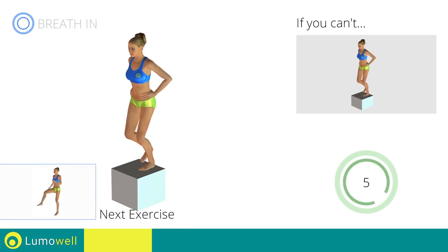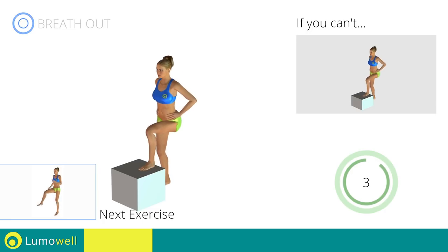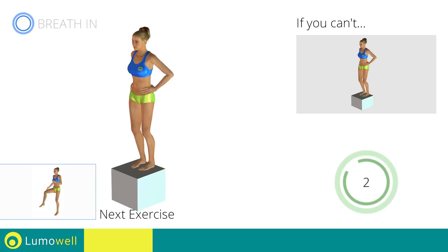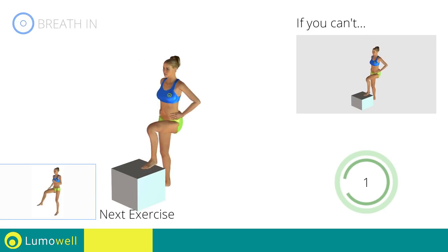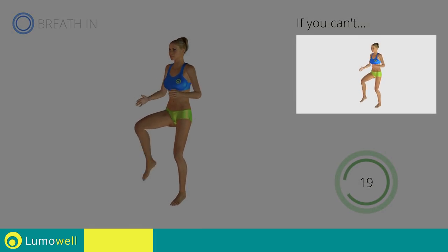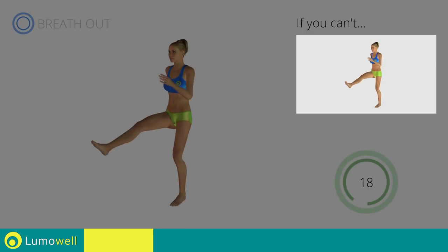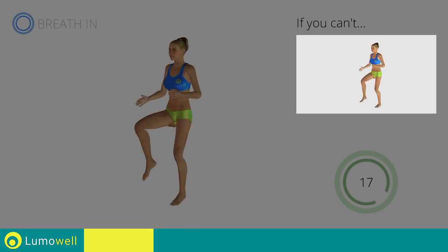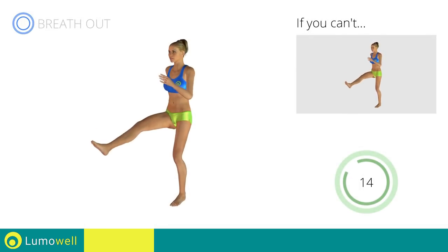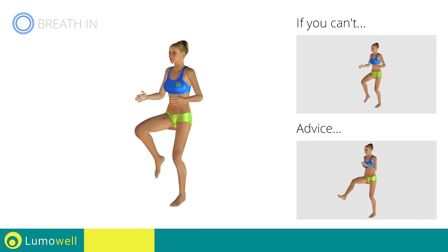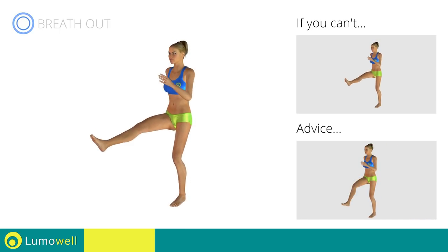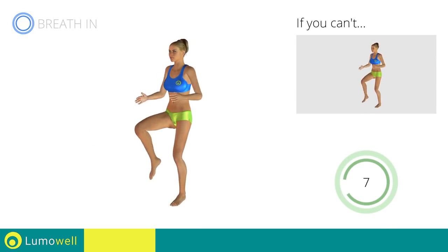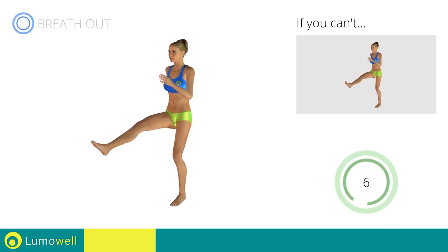Next exercise: one leg hops. Go! If you cannot do it, try not jumping and resting your foot on the floor after the extension. Do not raise or lower the thigh — always keep it perpendicular to the torso.